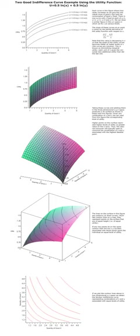In economics, an indifference curve connects points on a graph representing different quantities of two goods, points between which a consumer is indifferent. That is, the consumer has no preference for one combination or bundle of goods over a different combination on the same curve. One can also refer to each point on the indifference curve as rendering the same level of utility for the consumer. In other words, an indifference curve is the locus of various points showing different combinations of two goods providing equal utility to the consumer.